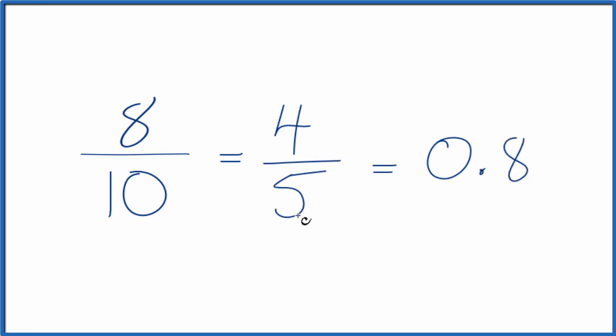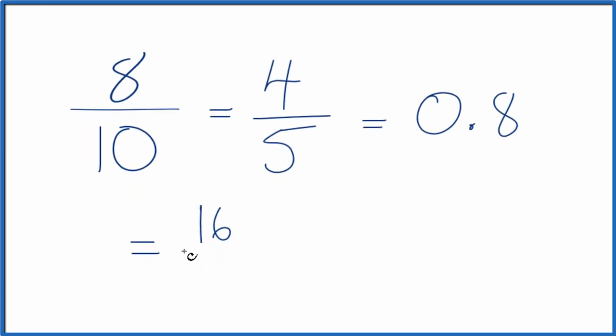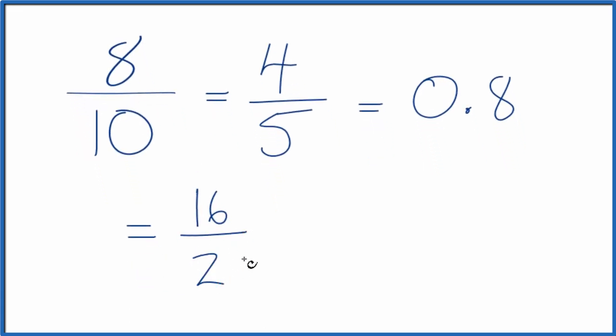Instead of dividing by 2, we could multiply 8 by 2 and 10 by 2. So when we do that, 8 times 2, that equals 16. 10 times 2 is 20. Another equivalent fraction for 8 tenths.